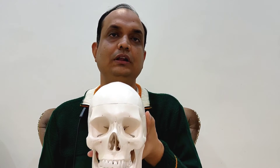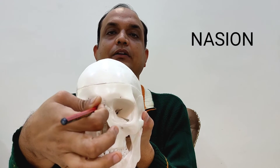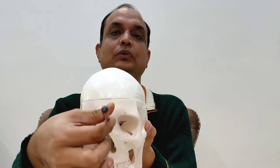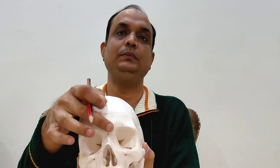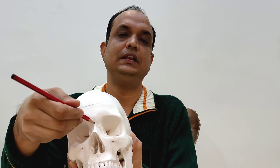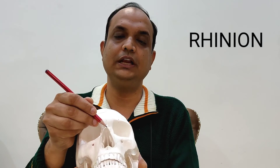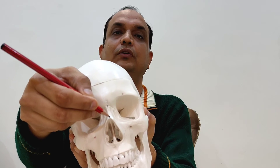Anteriorly, you will have two points: one is known as nasion, and another is known as rhenion. Nasion is the point where the upper part of the internasal suture meets with the frontal bone. There are two nasal bones on both sides, and between them you have the internasal suture — tracing it upward to where it meets the frontal bone gives you the nasion. Going downward, the lower point of this internasal suture is known as rhenion, below which you will have the articulation with the nasal cartilage.